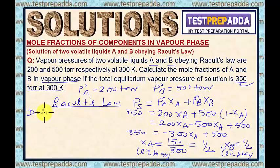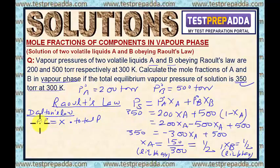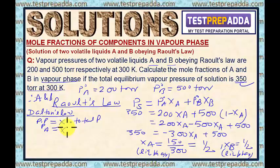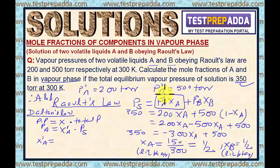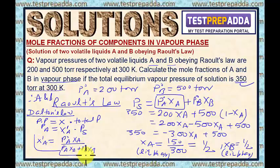To find mole fractions in the vapour phase, use Dalton's law. Dalton's law says: partial pressure equals mole fraction times total pressure. For component A in the gas mixture, partial pressure of A equals X'_A (mole fraction of A in vapour phase) times P_S (vapour pressure of solution). Therefore, X'_A = P_A / P_S = P⁰_A·X_A / (P⁰_A·X_A + P⁰_B·X_B).